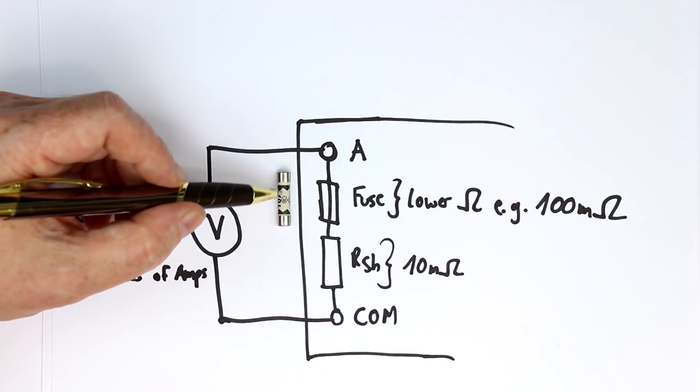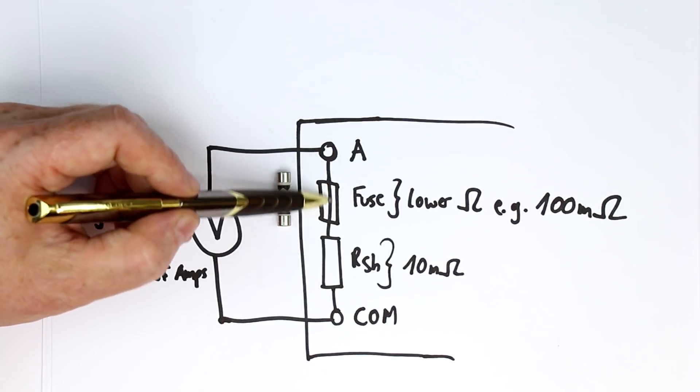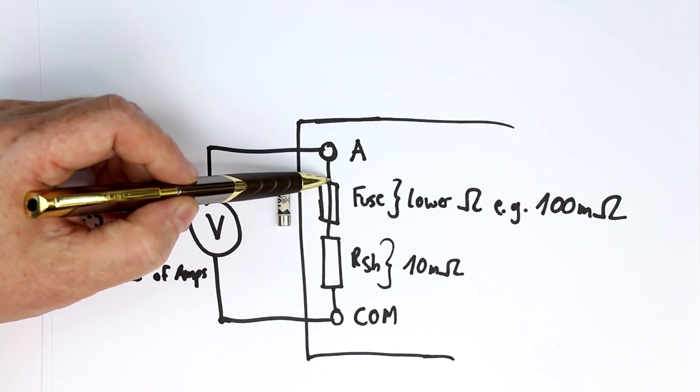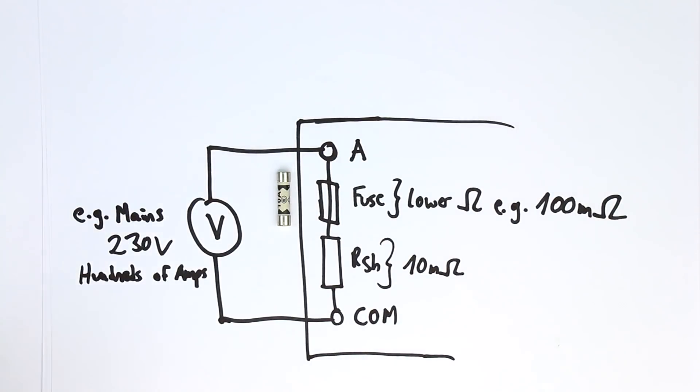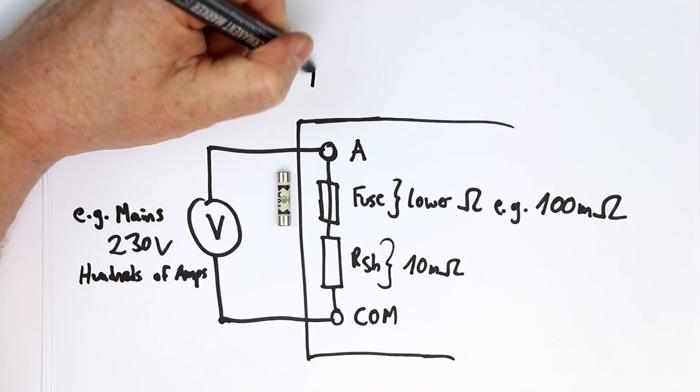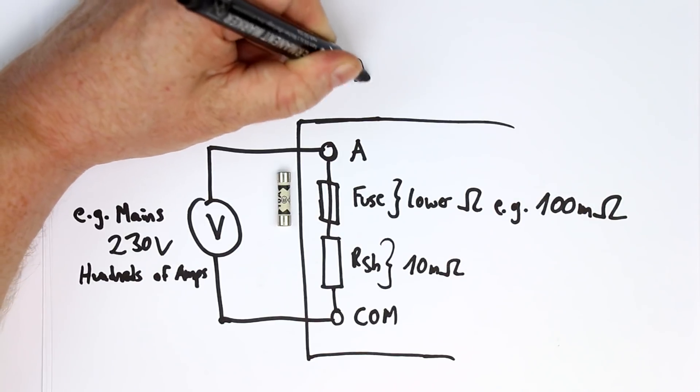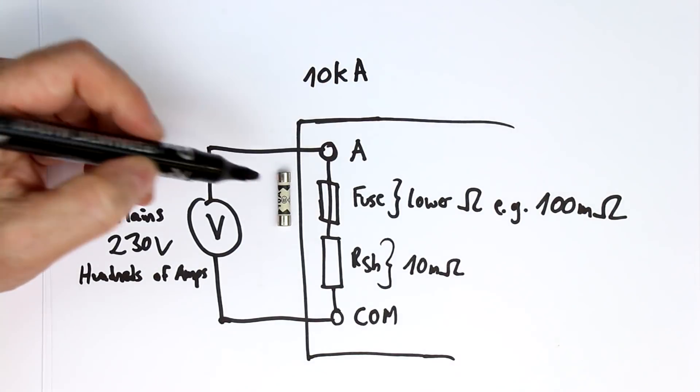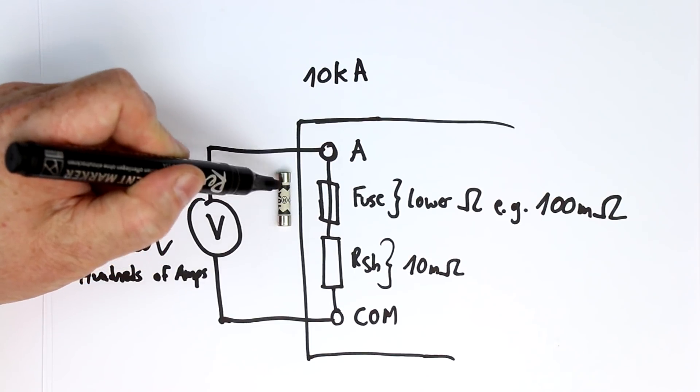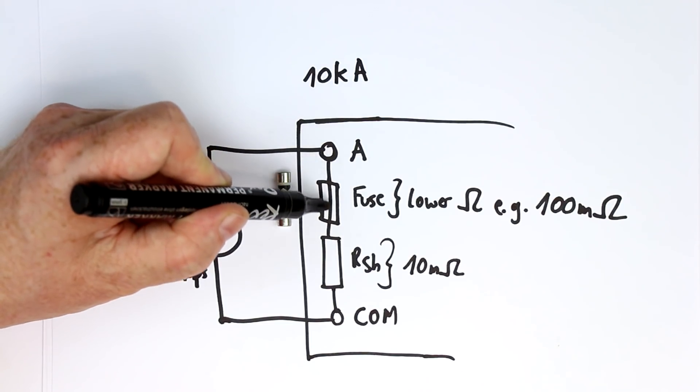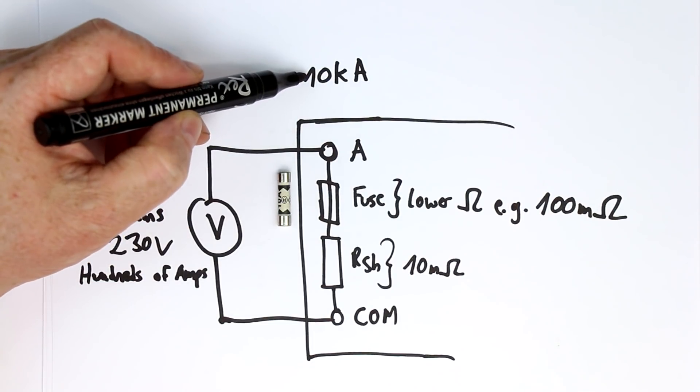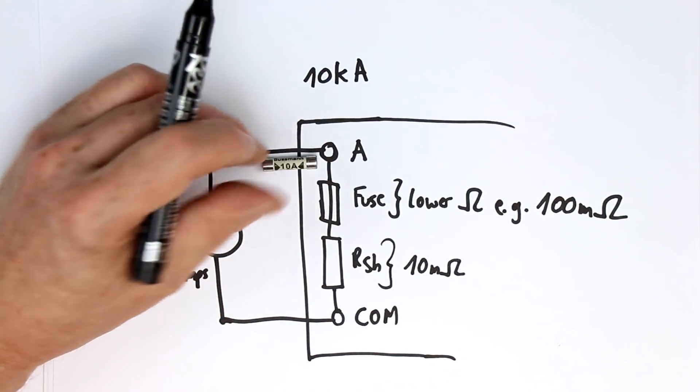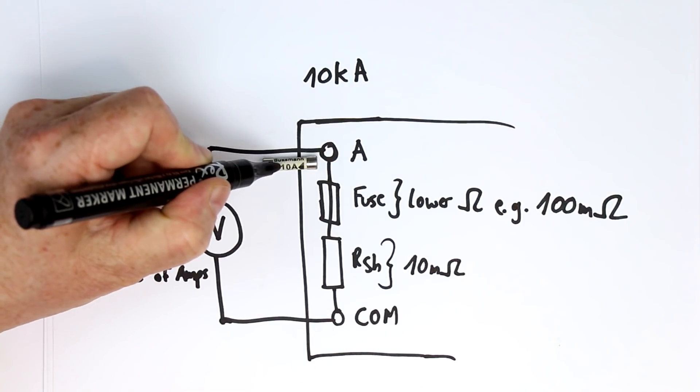So they have to interrupt the current flowing—not the normal current, but the current in the plasma arc. That's why they're rated, for example, at let's say 10 kiloamps. They're able to interrupt a current flowing via arcing of 10 kiloamps, even though their basic fuse rating is only 10 amps. If there's a current flowing above 10 amps, then first of all, the wire inside will melt.